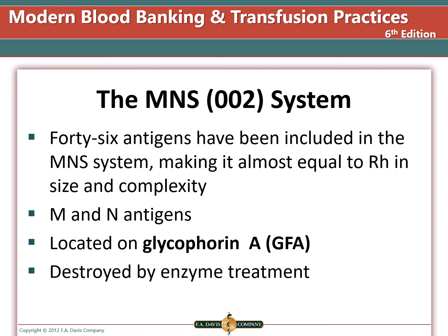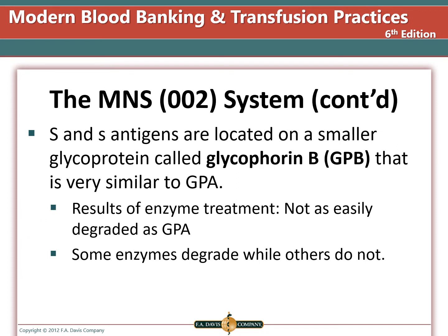There are 46 antigens in the MNS system, making it almost equal to Rh in size and complexity. The antigens M and N are located on glycophorin A and are destroyed by enzyme treatment, so antibodies to this system will not react with enzyme-treated panel cells. The Big S and Little s antigens are located on a smaller glycoprotein called glycophorin B, which is closer to the cell surface and not as easily degraded, though enzyme-treated cells should still not be used for definitive decisions on S antibodies.